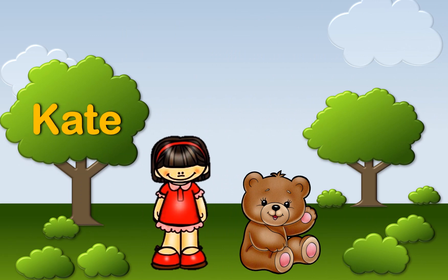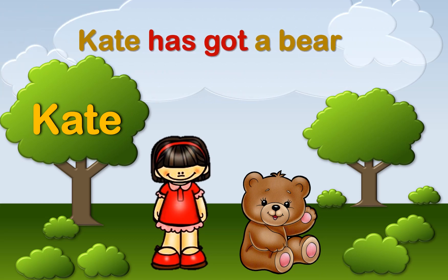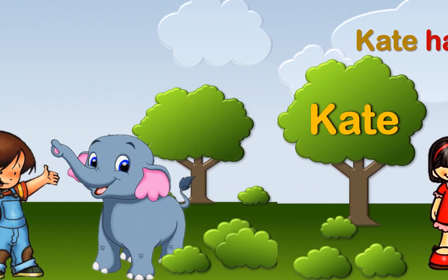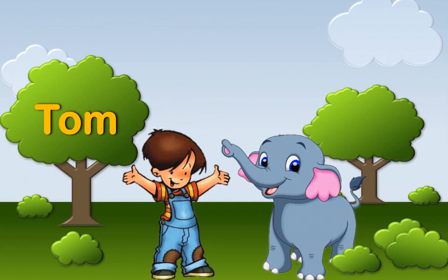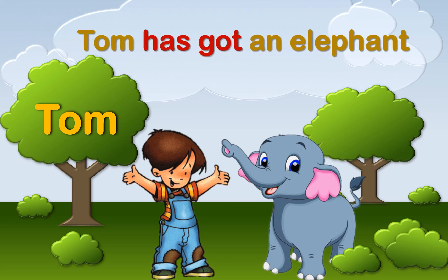Kate — I have to say Kate like she. So Kate has got a bear. Tom is like he. So Tom has got an elephant.